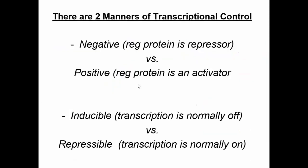There are different types of transcriptional control: negative or positive control, and inducible or repressible control. Think of it as two questions. First: is it negative or positive? If it's negative, the regulator protein is a repressor. If it's positive, the regulator protein is an activator. Second: is expression inducible or repressible? If transcription is normally off and you're turning it on, then it's inducible. If transcription is normally on and you're turning it off, then it's repressible — like flipping a light switch on and off.